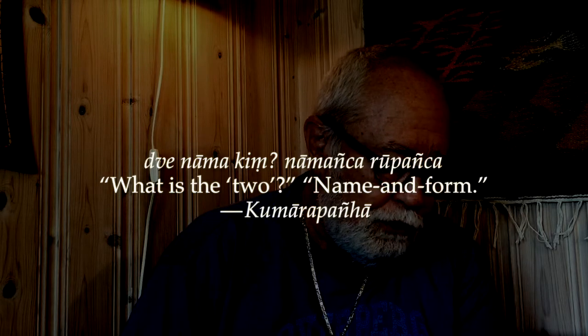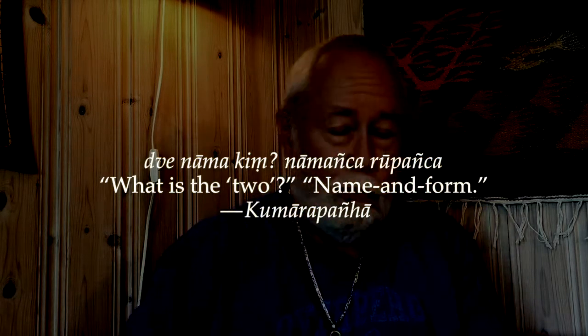The first issue we want to bring up is name and form. Every monk knows this catechism of ten questions which was asked by the Buddha to a young Arhant, only seven years old. All the questions are very deep: what is the one, what is the two, what is the three, and so on. When the Buddha asks what are the two, the answer is name and form — Nama Rupa. These are very simple Pali words based on Sanskrit words; in fact they're identical in both languages. Nama means name and Rupa means form.